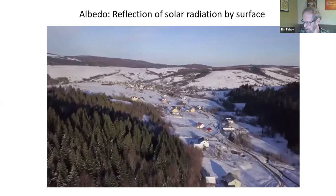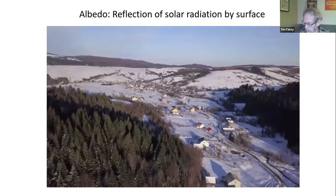Albedo is the reflection of solar radiation by a surface. If you have a high albedo, most of the sunlight falling on the surface is reflected back to the sky and doesn't warm the surface or lower atmosphere. The higher the albedo, the less warming. A white-colored surface like snow has a high albedo compared with the albedo of a forest.